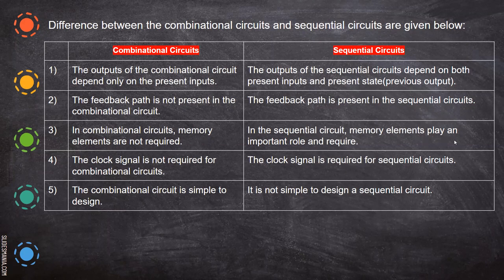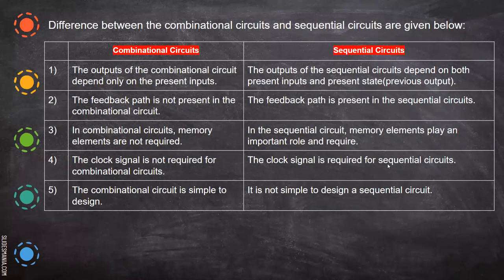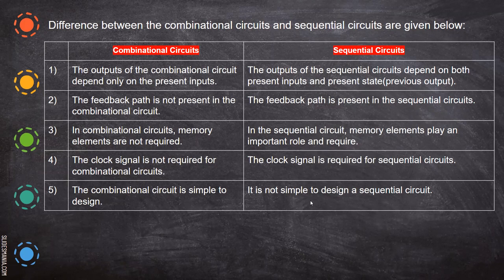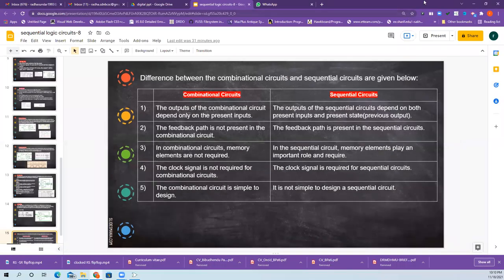The clock signal is not required for combinational circuits, whereas the clock signal is required for sequential circuits. The combinational circuit is simple to design, whereas here it is not that simple - it is a little bit complex. The complexity increases. These are the main differences between combinational and sequential circuits.